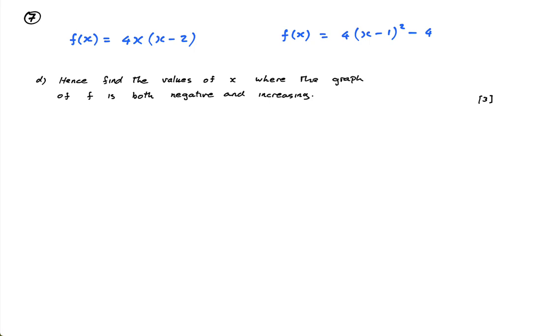Okay, part d says hence find the values of x where the graph of f is both negative and decreasing. So this is from part b and this is from part c. We got to write f(x) in these two forms. Now what this question is clearly trying to do is test your knowledge of quadratics and how the functions relate to the graph.